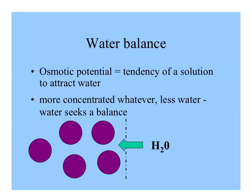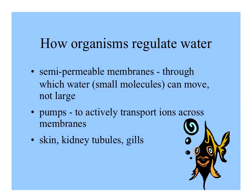From general bio you'll remember about osmosis, and this is important in water balance in organisms. The tendency of a solution to attract water is its osmotic potential, and that potential is greater if there are more sugars or salts dissolved in that water. In this diagram, pure water is on the right and a solution with solutes — the purple dots — is on the left. The concentration is much greater on the left, so water will move from right to left to equilibrate. Semipermeable membranes are really important in all kinds of organisms for regulating water; only the small water molecules can move through them, not the larger solute molecules.